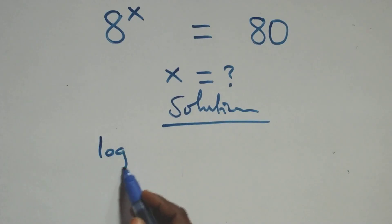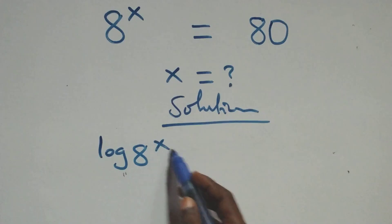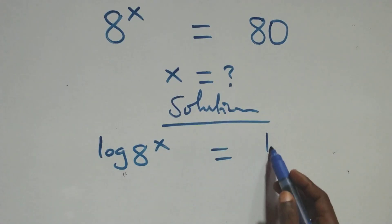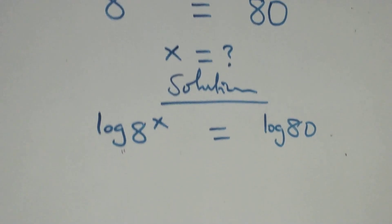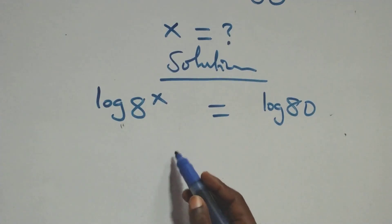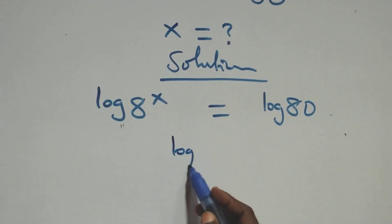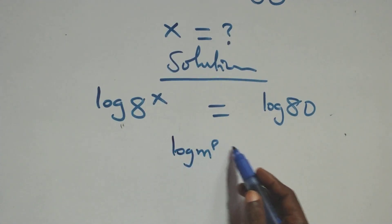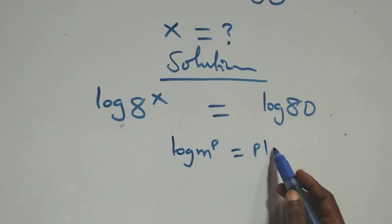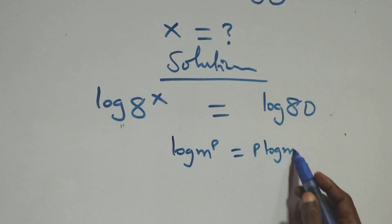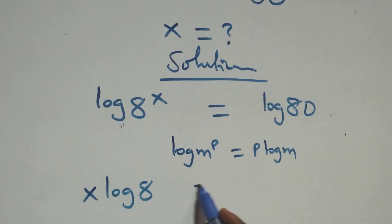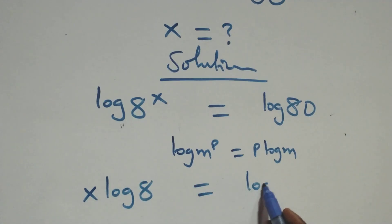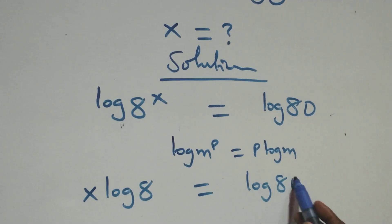We have log 8 raised to power x equals to log 80. Then we apply the power rule of logarithm, where log m raised to power p is the same thing as p log m. So we have x log 8 equals to log 80.